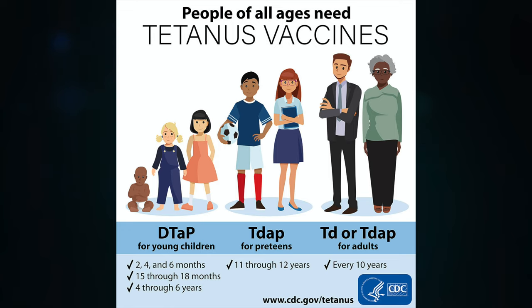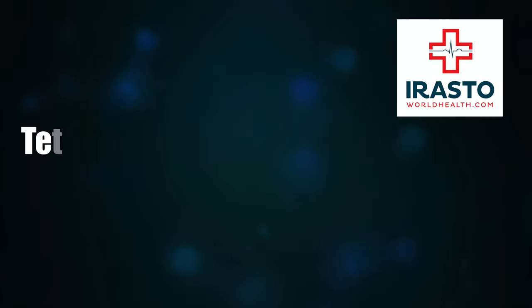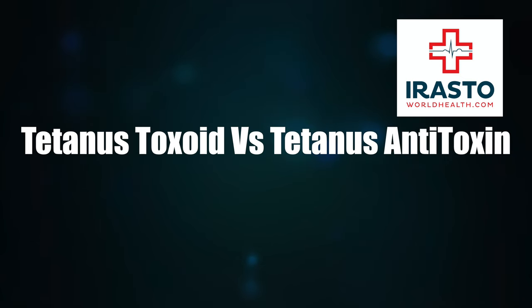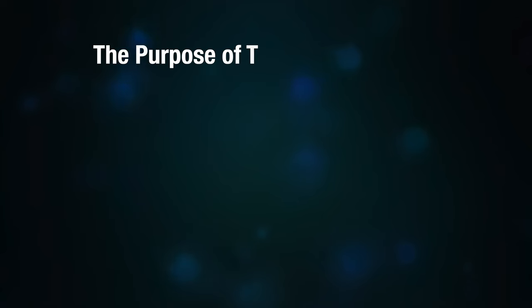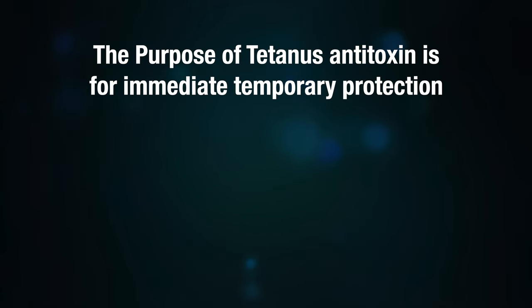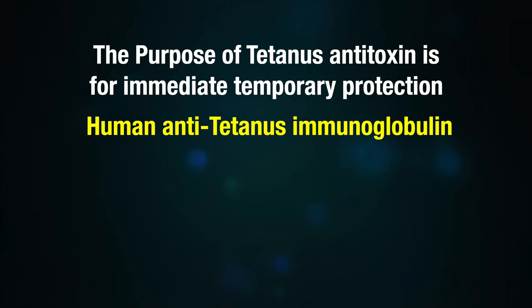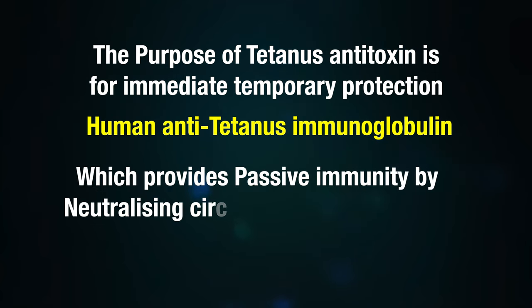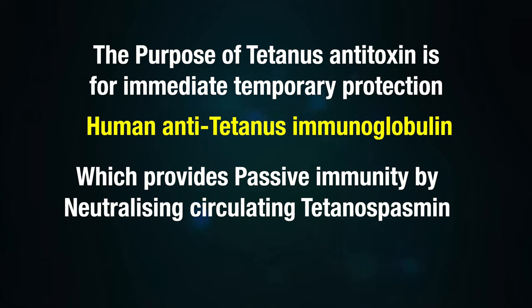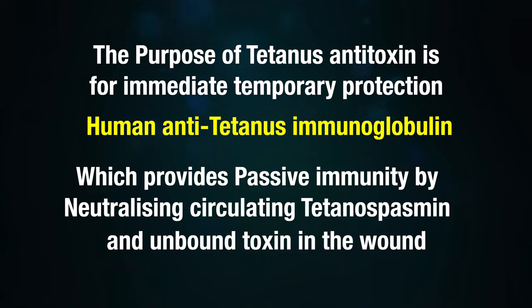Td or Tdap are used in adults as boosters once every 10 years. Difference between tetanus toxoid and tetanus antitoxin: active immunization is provided by tetanus toxoid and used for long-term protection. Tetanus antitoxin, also called human antitetanus immunoglobulin, is for immediate temporary protection and provides passive immunity by neutralizing circulating tetanospasmin and unbound toxin in the wound.